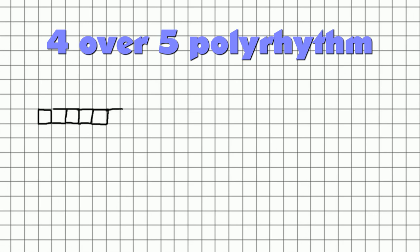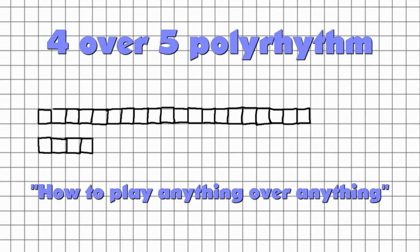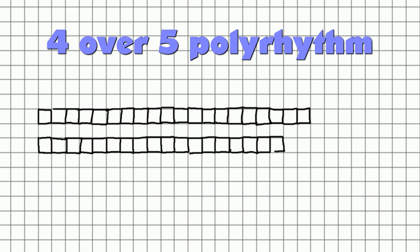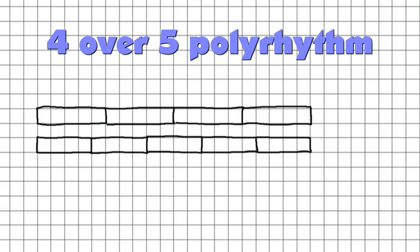What does a 4-over-5 polyrhythm look like? If you follow the instructions in my tutorial 'how to play anything over anything' — an episode of my series 'The Power of Conical' — you need to draw a grid of 20 subdivisions first. So there are 20 tiny squares, and we're going to do two rows of them. Then you can color them in groups of 4 squares as well as in groups of 5 squares. Remember that the notes start at the left edge of each rectangle. You can use this graphic approach for all rhythms and all polyrhythms.